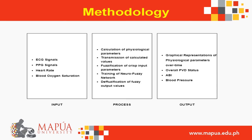For our conceptual framework, the inputs of the system include the ECG and PPG signals obtained from the patient. Their heart rate and blood oxygen saturation were obtained as well. These readings are transmitted to the servers where they are stored and processed. The raw signals were processed using filtering and peak finding methods to calculate the physiological parameters needed in the study, particularly the systolic and diastolic blood pressure. The neurofuzzy system is trained and used to calculate the ABI of the patient. The system also incorporated graphical representations of physiological parameters over time.